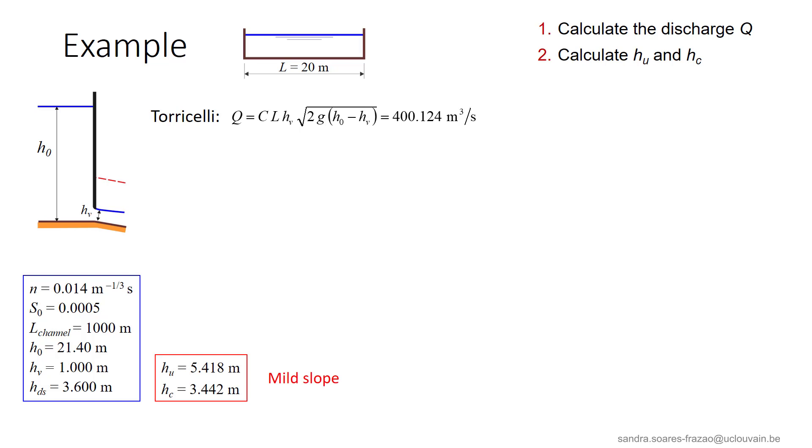Then, with this discharge, we can calculate hn and hc, and we find that this channel has a mild slope, because hc is below hn.